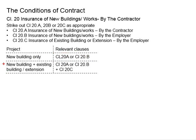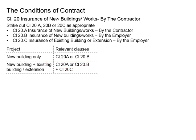In the case where the project involves a new building and there are existing buildings or structures within or nearby the construction site that may be affected, Clause 20C will be added. Under these circumstances, it will be either Clause 20A or 20B, plus Clause 20C. Having CAR insurance taken by both the contractor and the employer is not necessary, as one of them would be redundant.